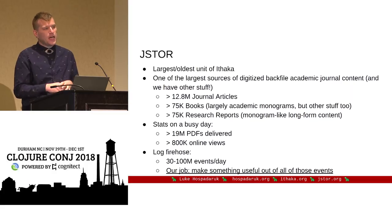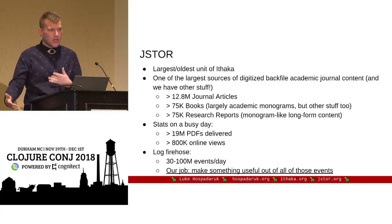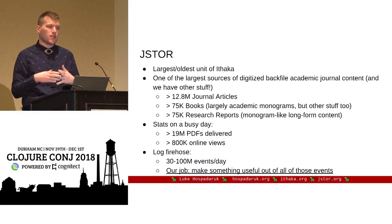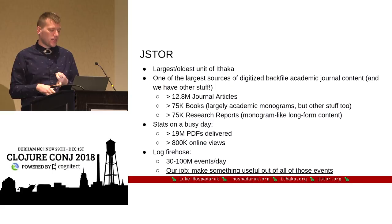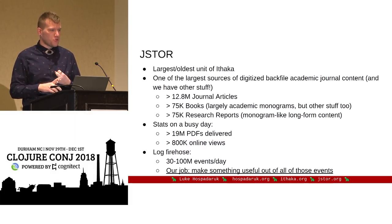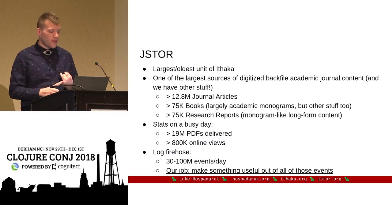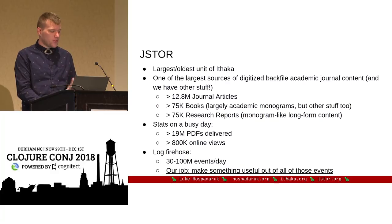JStor specifically — our primary business is delivering digitized backfile content. We were one of the first people to digitize. This is journals that are older than about five years old. In the late 90s, they started scanning these en masse, putting them online, and indexing them so they can be searched. Our mission is to expand access to academic content in general — academic monograph books, large free-form research reports, and other things like that. We'll deliver up to over 20 million PDFs on a busy day in November. We have a primary log firehose with tens or over 100 million events per day depending on what's going on.